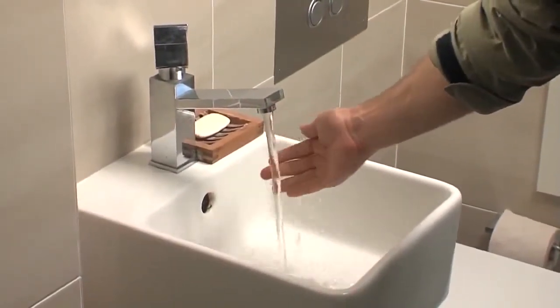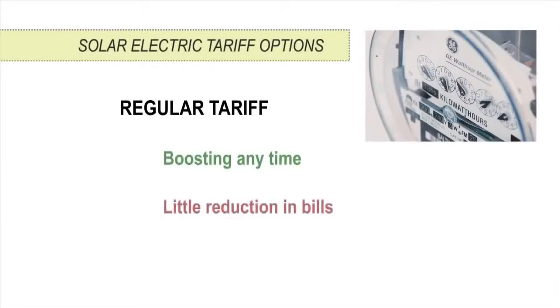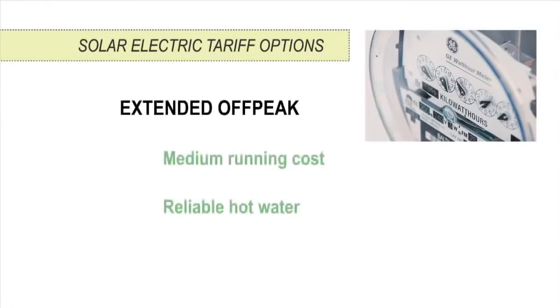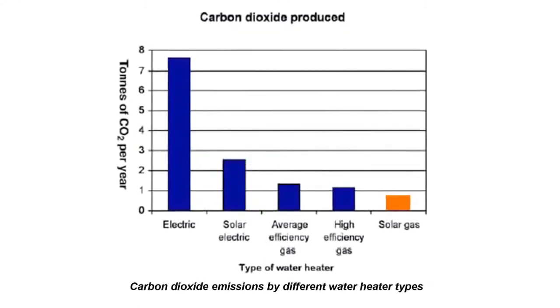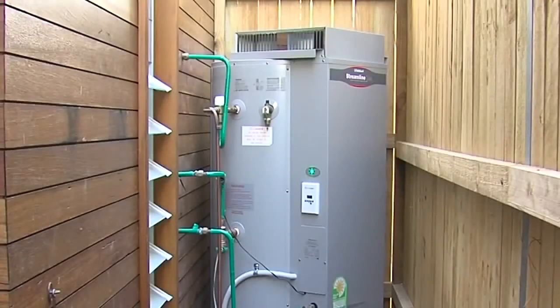When advising the householder on their energy tariff options, explain the pros and cons of each option. A regular tariff allows boosting at any time, but it won't lead to a reduction in their bills if their previous system was electric off-peak. Off-peak will be cheaper, but may not fit the hot water usage patterns of all households. If available, extended off-peak or off-peak 2 is often a good compromise. Natural gas boosters have the advantage of lower emissions and running costs compared to electric boosters, and also aren't subject to time-of-use restrictions.